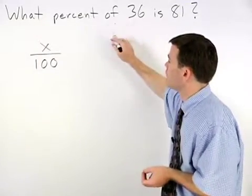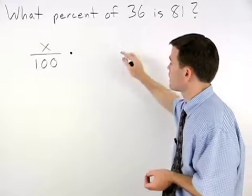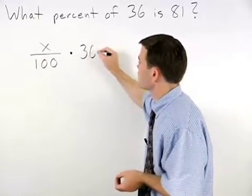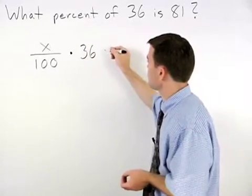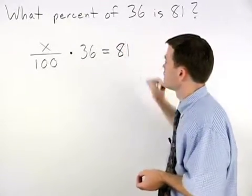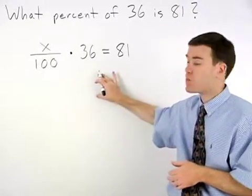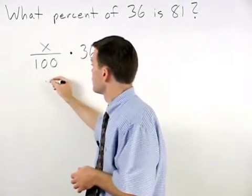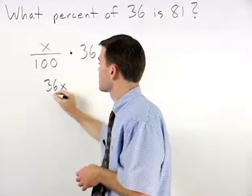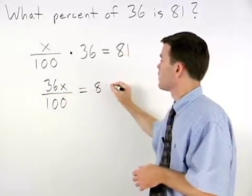Of means times, 36 is 36, is means equals, and 81 is 81. We can rewrite this problem as 36x over 100 equals 81.